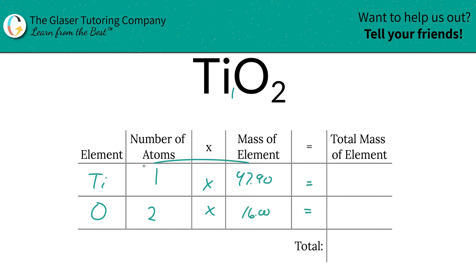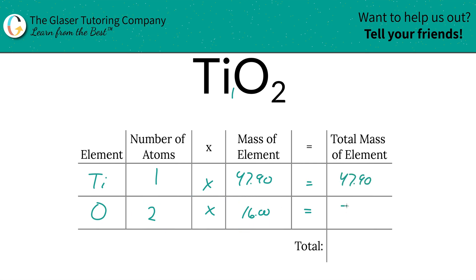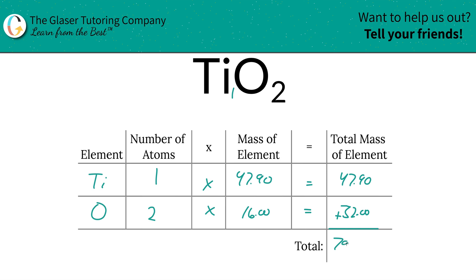Then we're going to find the total mass of the element in the compound by simply multiplying across each row. So that's 47.90 for titanium. Oxygen then is going to be 32. And then to find the total mass of the entire compound, we're simply going to add up the total masses of each element. Doesn't that kind of make sense?